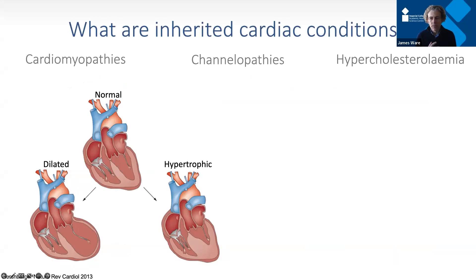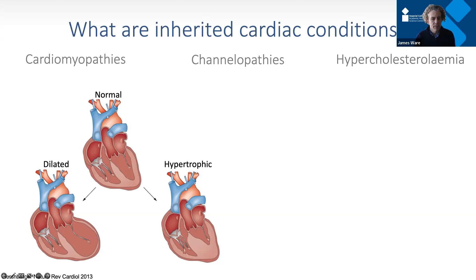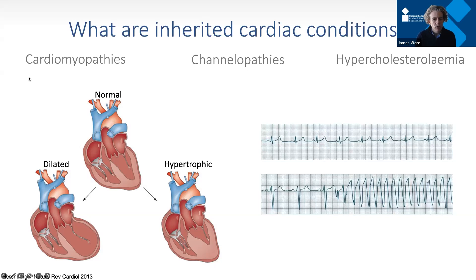Inherited cardiac conditions are heart diseases that run in families — more specifically, conditions that can be caused by a single faulty gene. Almost every cell in our body contains a complete copy of our genome, all the instructions to make all the proteins that are the building blocks of life. Each cell has two copies of most genes, one from the mother and one from the father, and inherited conditions usually arise when there's a single faulty copy of a gene encoding something important for a heart muscle cell.